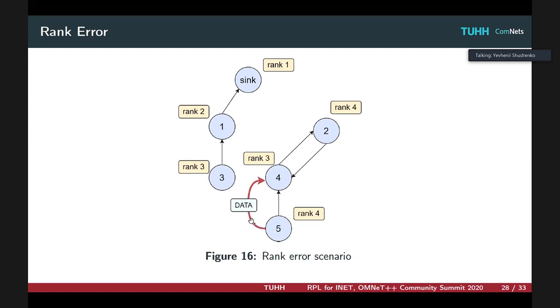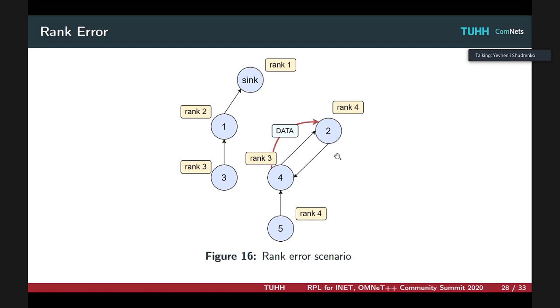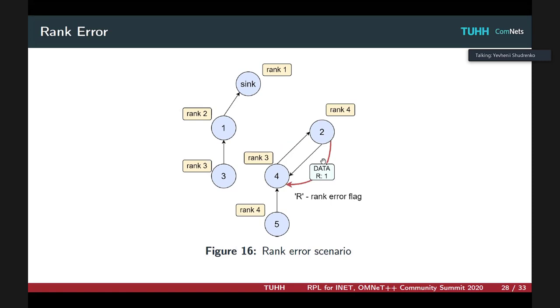Essentially, the data packet is being transmitted from host 5. Host 4 tries to forward the packet to its supposedly preferred parent, host 2. Host 2 determines that the packet comes upwards but from a node with a lower rank, which shouldn't be possible. Host 2 returns the packet to node 4 with a rank error flag set to 1. This is not yet the rank error, not a condition for loop detection trigger because this rank error should happen twice.